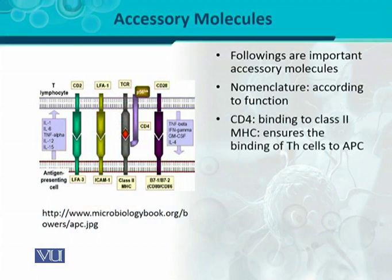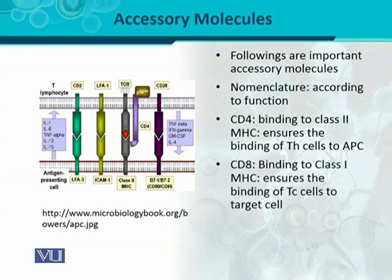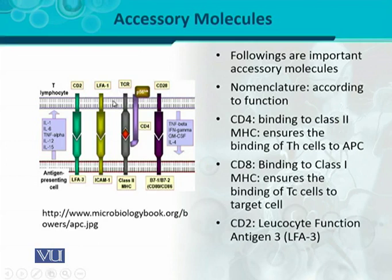CD4 binding to class 2 MHC ensures the binding of T helper cells to antigen presenting cells. In this figure, you can see that the TCR is present on the surface of the T cell. When the TCR engages, the red antigen is presented with class 2 MHC, which is present on the antigen presenting cell. The co-receptor of T helper cells is CD4, and here you can see that CD4 also engages with the class 2 MHC molecule in order to make the interaction stronger.